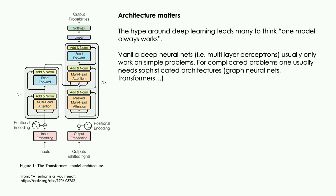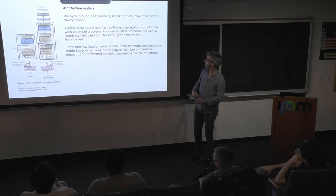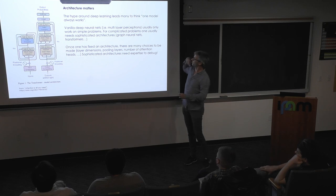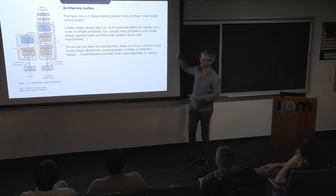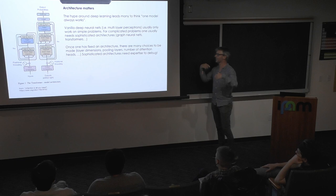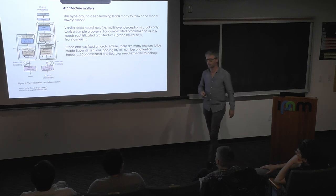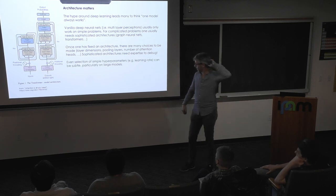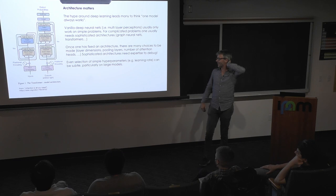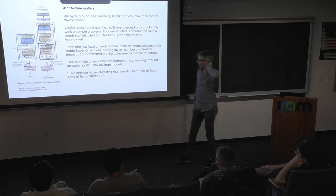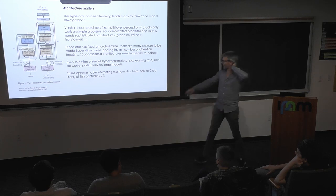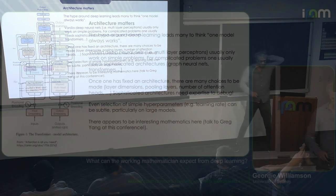Complicated problems need sophisticated architectures. Graph neural nets, transformers are the two that feature in this talk. And also, once you fix an architecture, there's more choices to be made. Layer dimensions, et cetera. And these need expertise to debug. So even learning rate is an interesting question. And if you want to know about learning rate, Greg is at this conference. I've learned so much talking to him about this stuff.